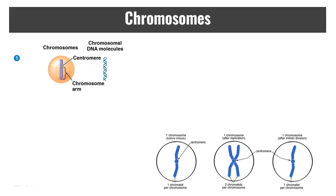In both prokaryotes and eukaryotes, most cell division involves the distribution of identical genetic material — DNA — to two daughter cells. The exception, of course, is meiosis, which is a special type of eukaryotic cell division that can produce sperm and eggs.